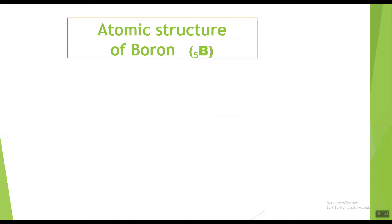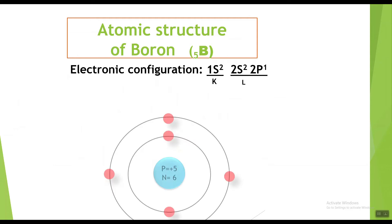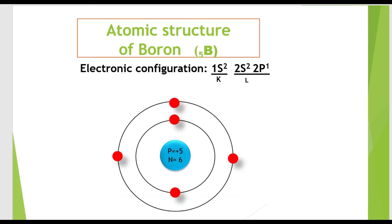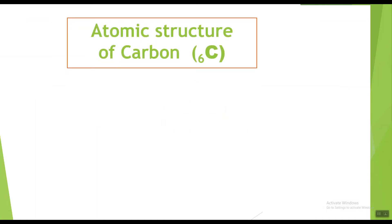Now boron. The symbol for boron is B with atomic number 5, showing it has five electrons. The electronic configuration of boron is 1s2 2s2 2p1, showing two electrons in the K shell and three electrons in the L shell. The S subshell can accommodate a maximum of two electrons; if there are more, they go to the higher energy subshell. The atomic structure of boron shows five protons and six neutrons in the nucleus, with two electrons in the K shell and three in the L shell.